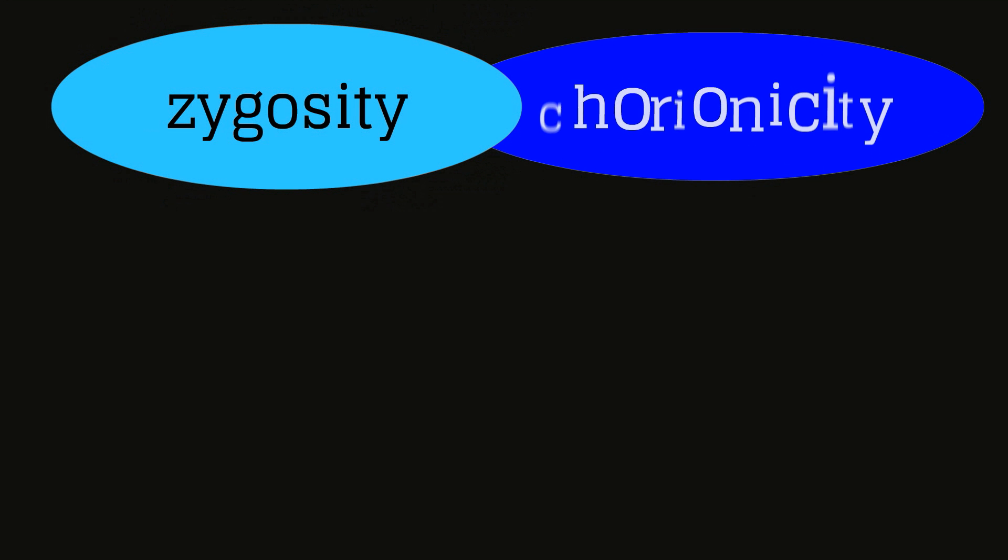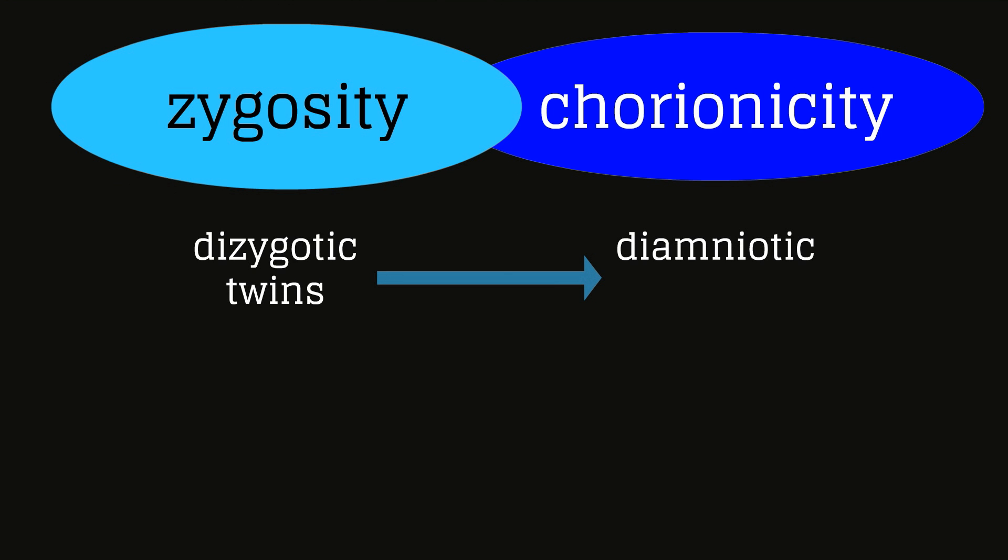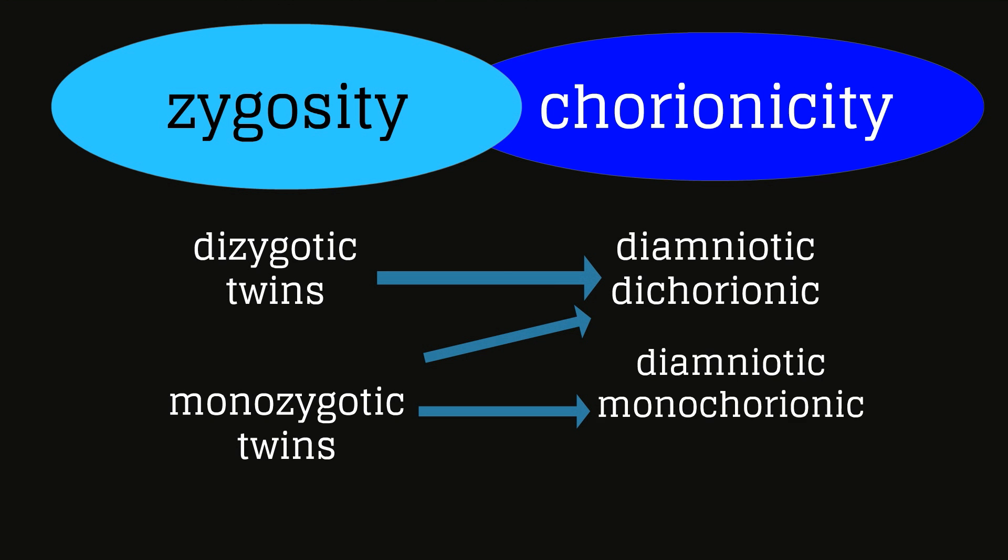The distinction between zygosity and chorionicity can be confusing for new learners, so let's spend a moment here to emphasize some key concepts. Dizygotic or fraternal twins are all diamniotic dichorionic. Monozygotic twins or identical twins can be any of the three chorionicities.